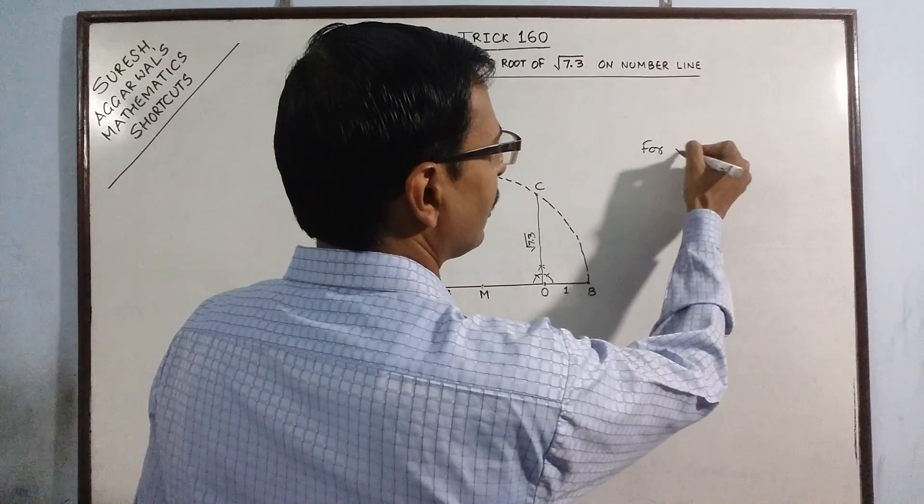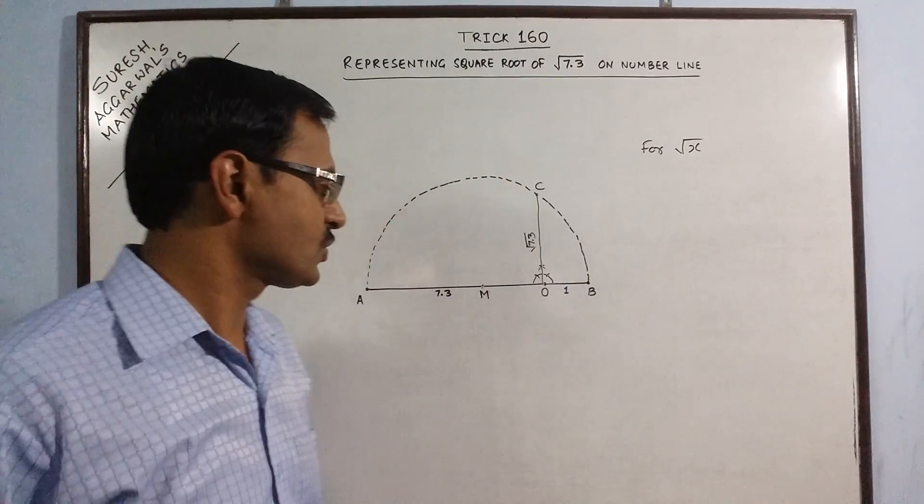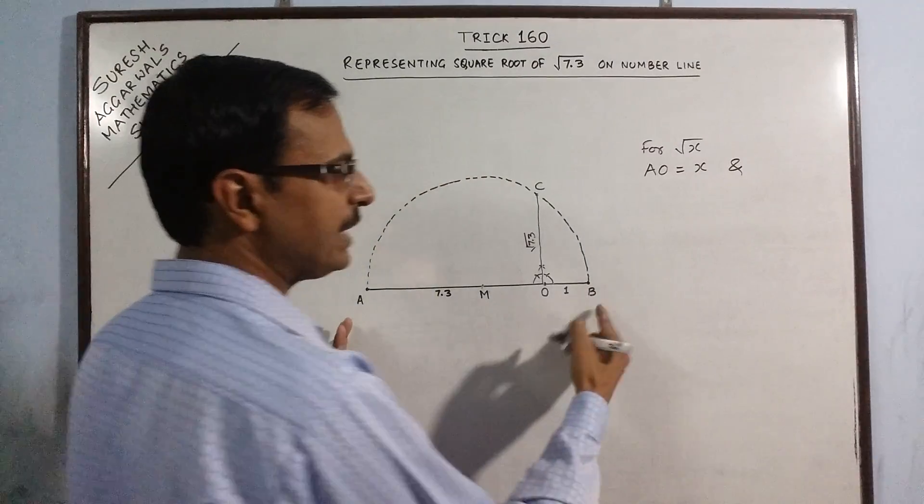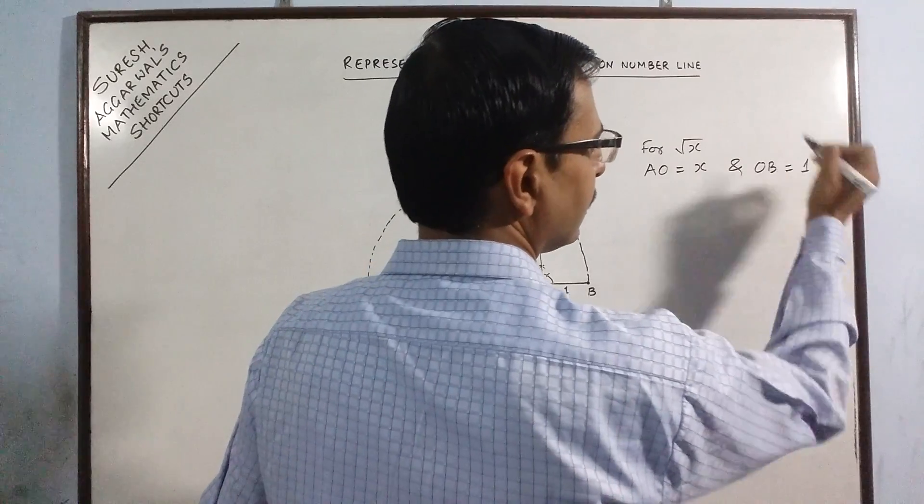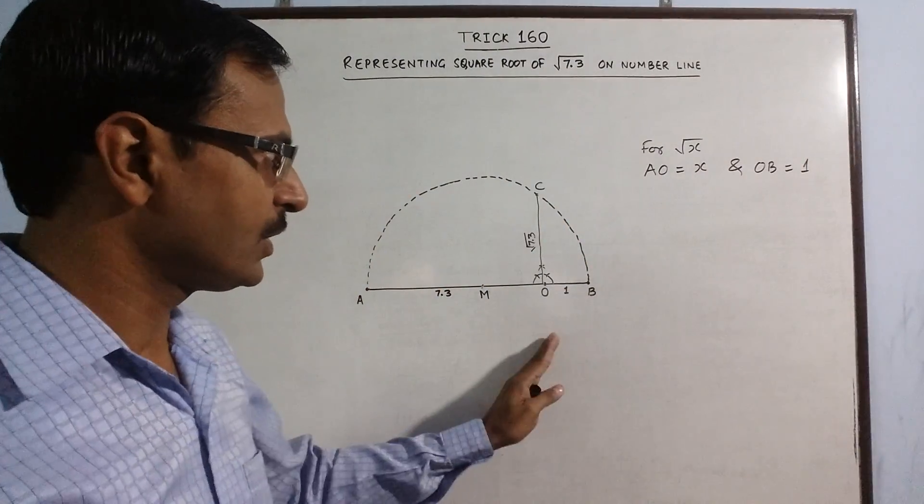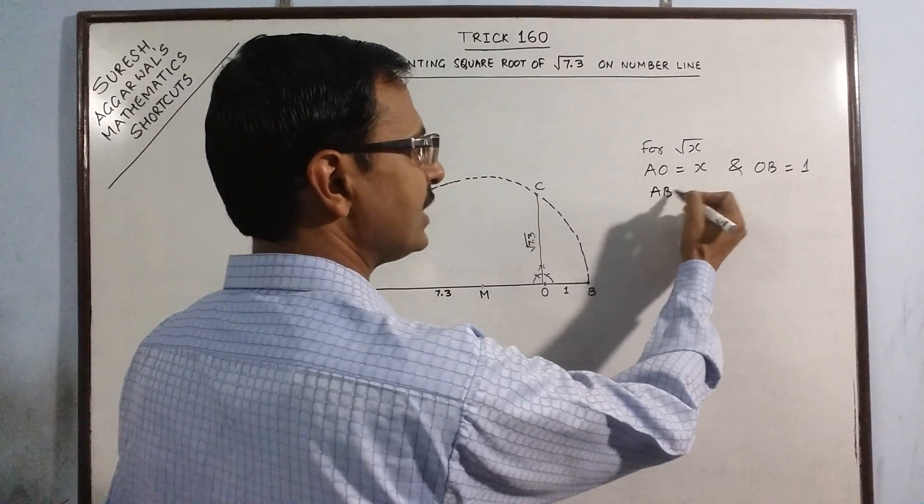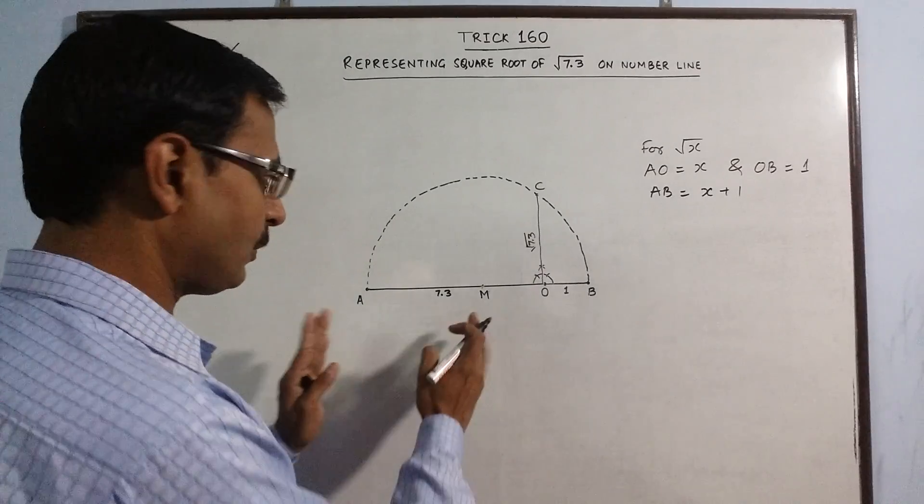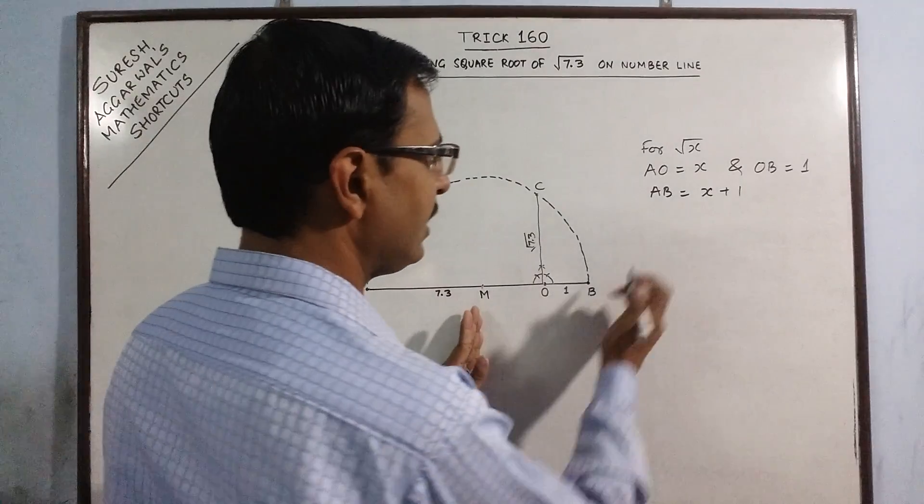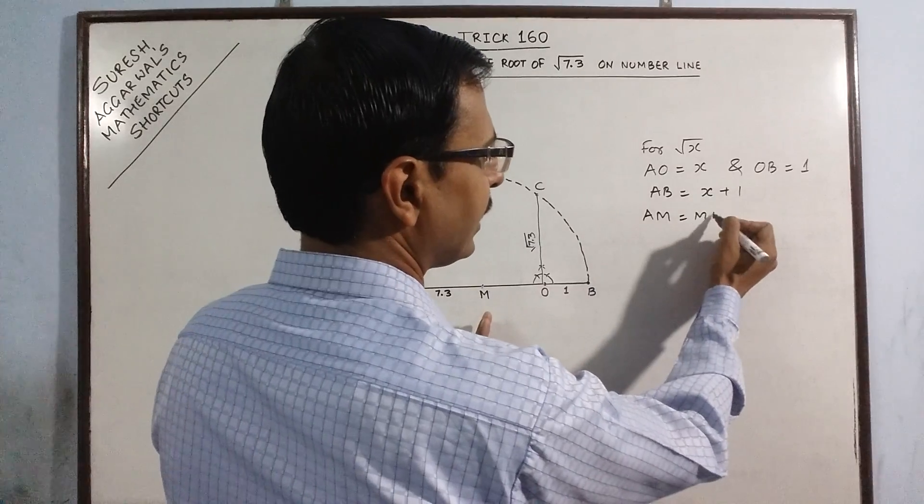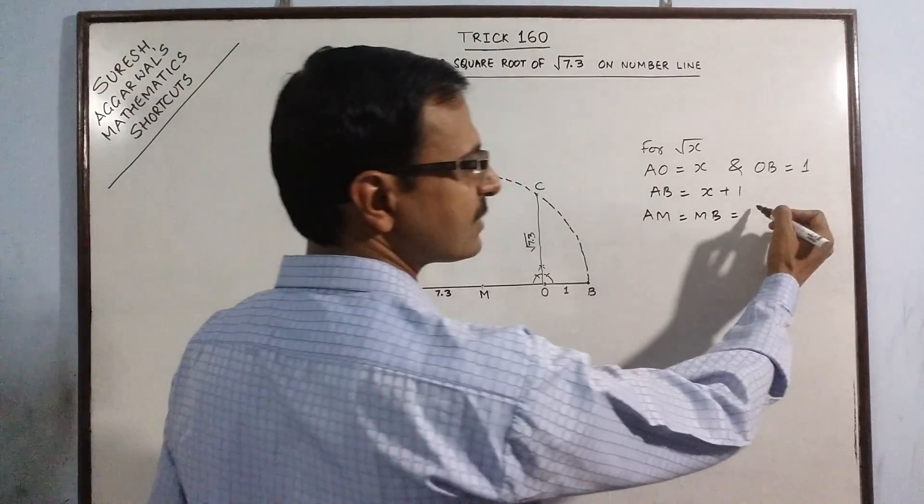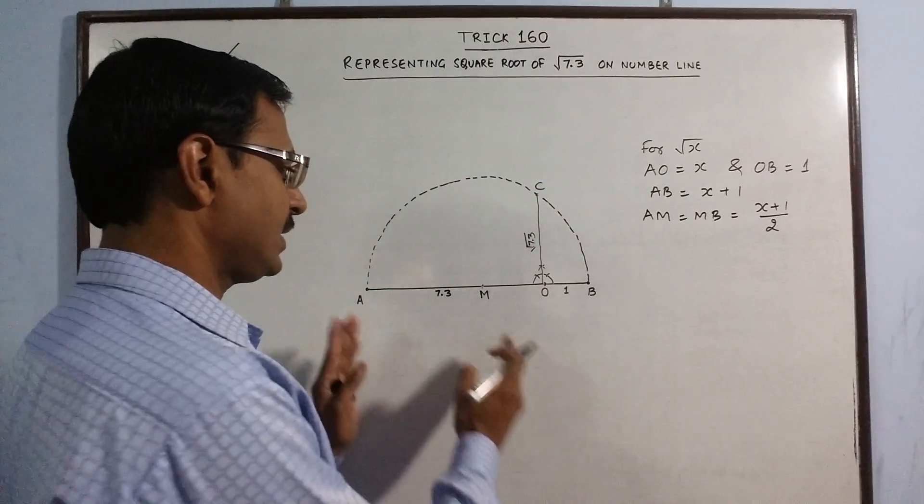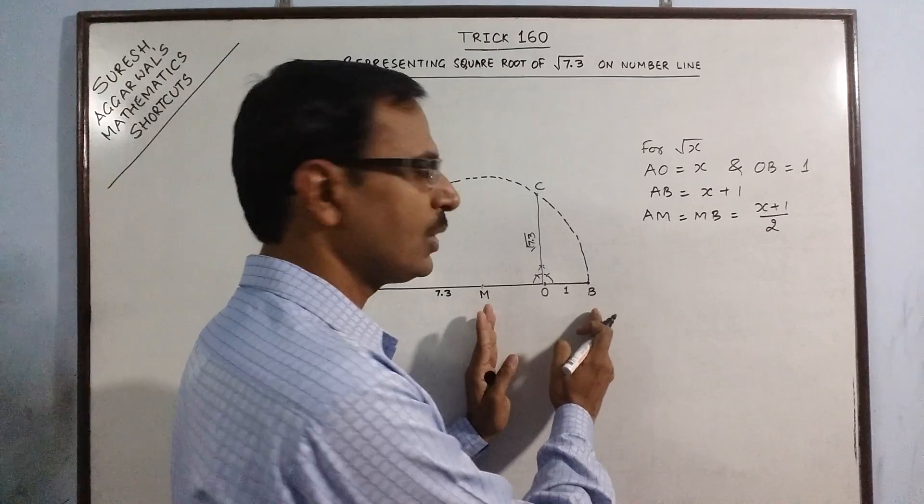Suppose we have to represent square root of x, so what I have done is I have taken AO as x and OB as 1. So obviously the entire line AB is x plus 1. Since I have marked the midpoint M, AM and MB both are actually half of AB, so x plus 1 by 2.